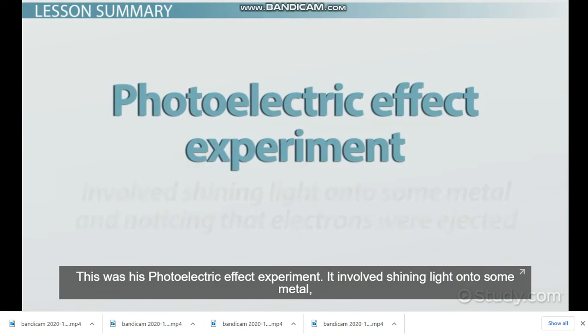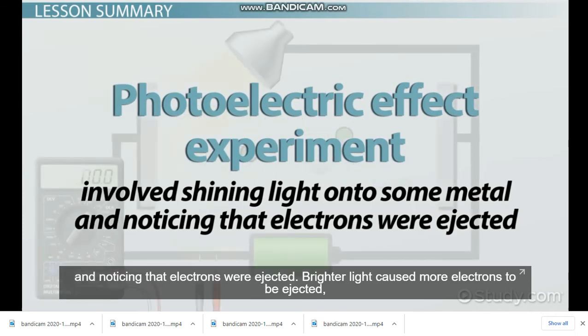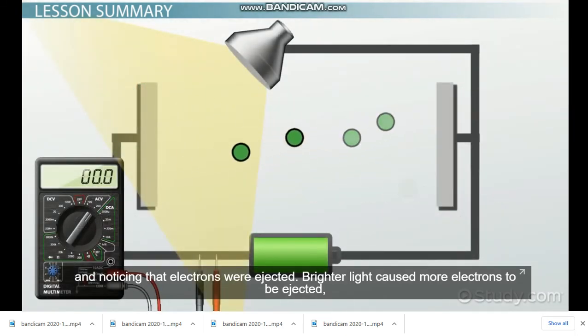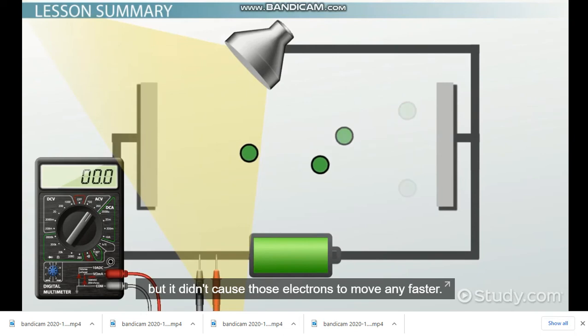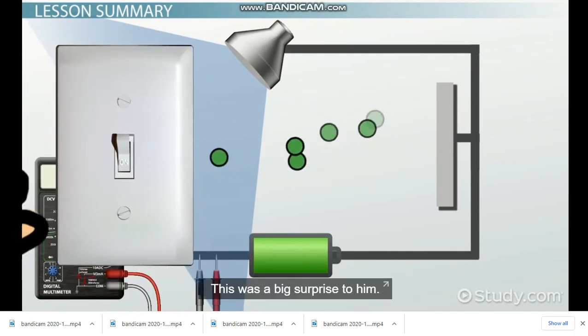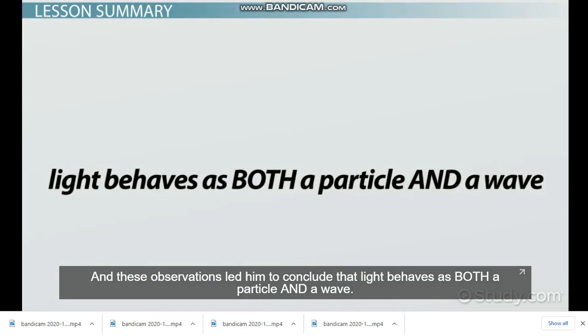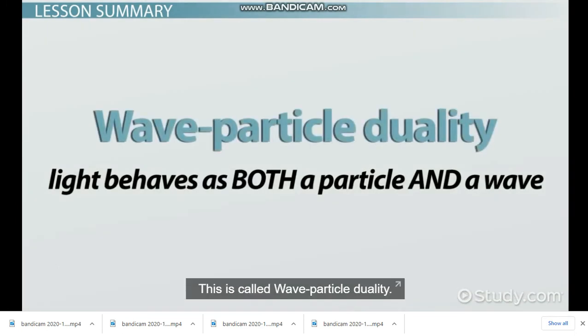Einstein's photoelectric effect experiment involved shining light onto some metal and noticing that electrons were ejected. Brighter light caused more electrons to be ejected, but it didn't cause those electrons to move any faster. When he increased the energy of the light by using bluer light, the ejected electrons were faster. This was a big surprise, and these observations led him to conclude that light behaves both as a particle and as a wave. This is called wave-particle duality.